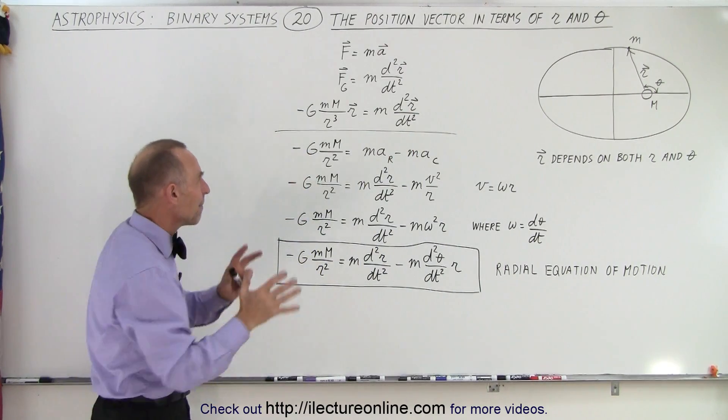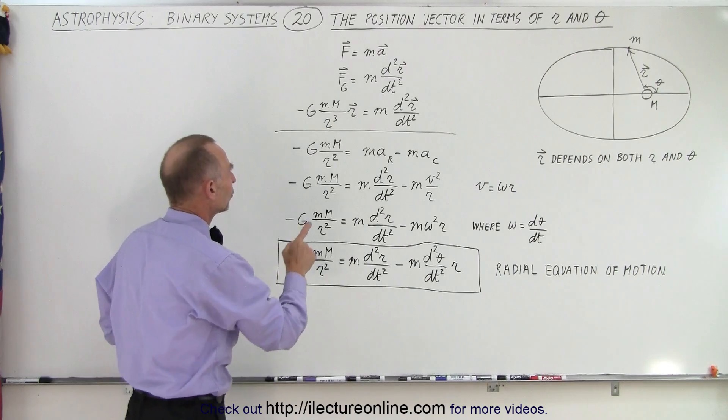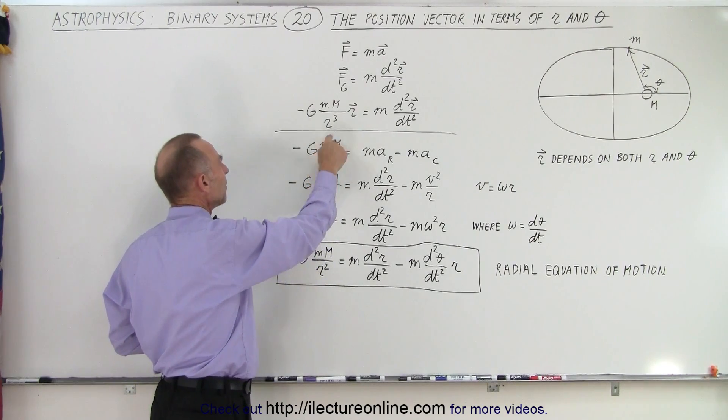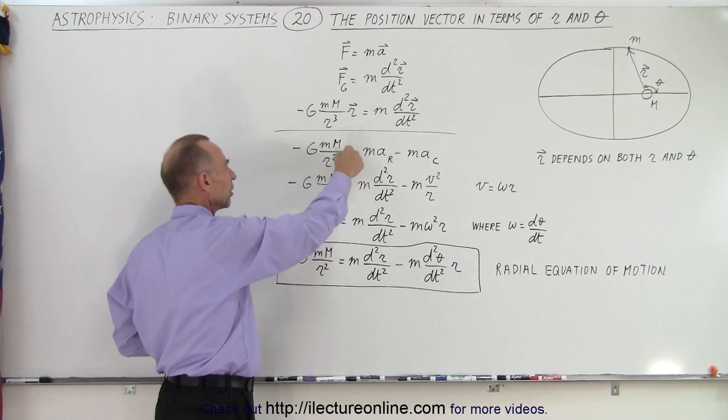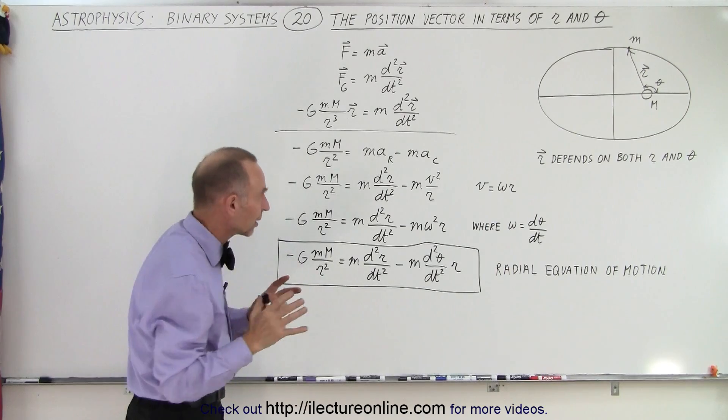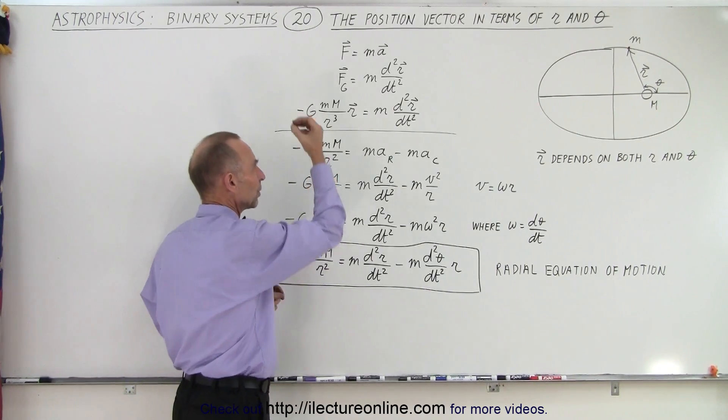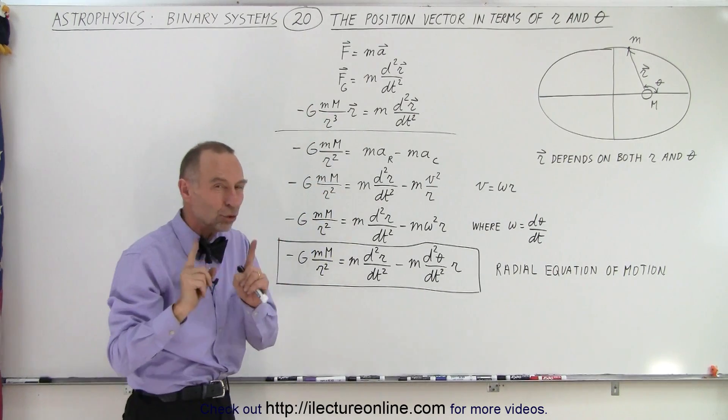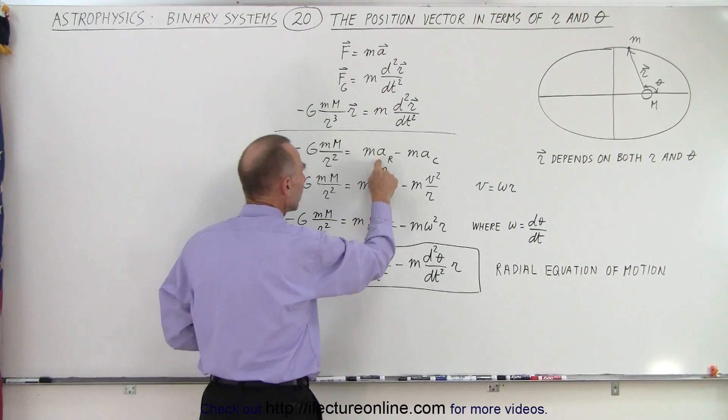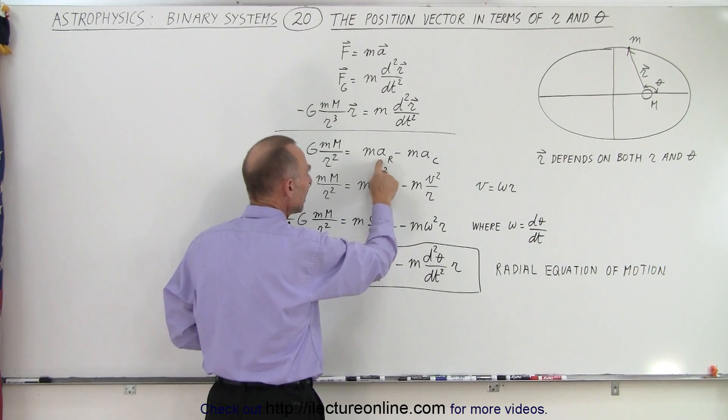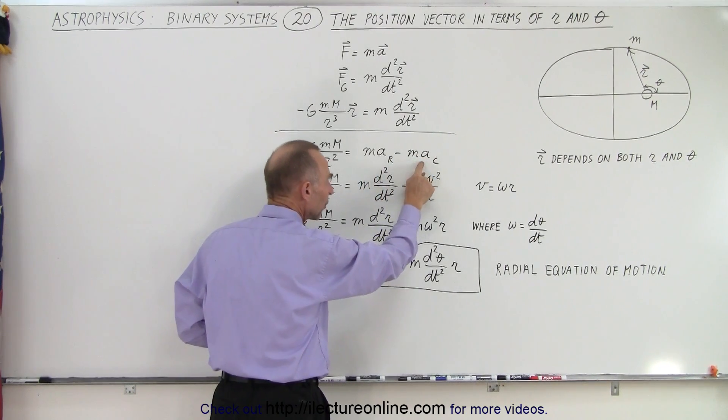But now when we take the magnitude of that, we write it as minus G Mm over r squared, which is the familiar format if we're only talking about the magnitude. Notice that the magnitude of the force between the planet and the star will result in two accelerations: the radial acceleration m times a, and the centripetal acceleration.